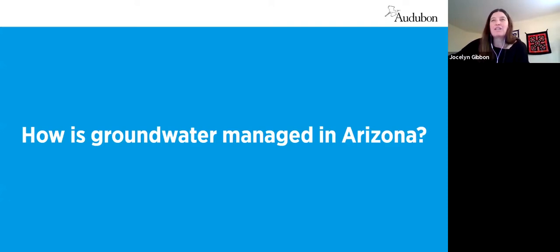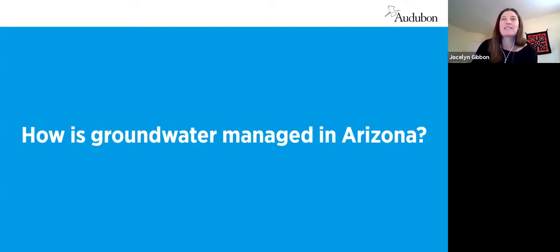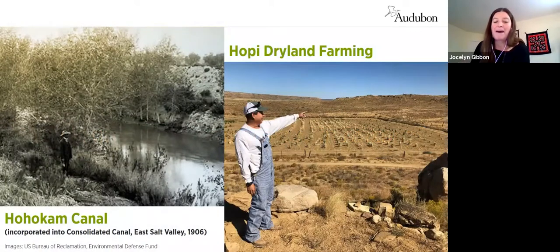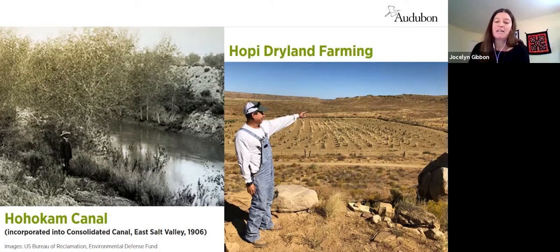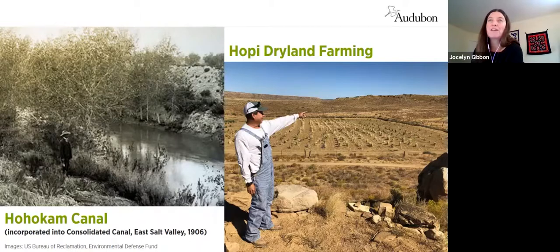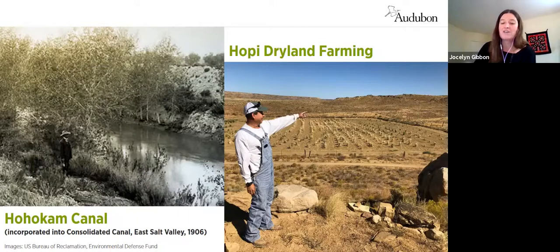We've heard why groundwater matters in our state. Now we're going to talk about how it's managed under Arizona's laws. To understand the basic outline, it's helpful to take a quick trip through history. Water has always been critical to people who have lived in what is now Arizona. There is a rich history of water stewardship and management by indigenous people in our region dating back thousands of years — for example, an extensive canal system built by ancestors of the O'odham people in the Salt and Gila River valleys more than a thousand years ago, and the Hopi who have been dryland farming in their homeland for the last 2,000 years or more.